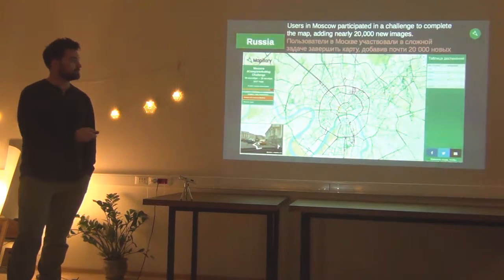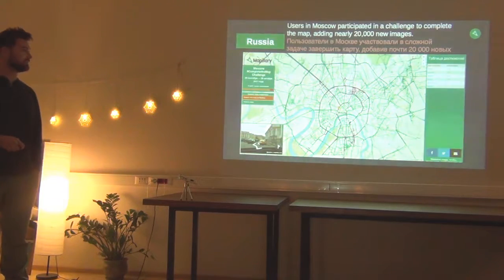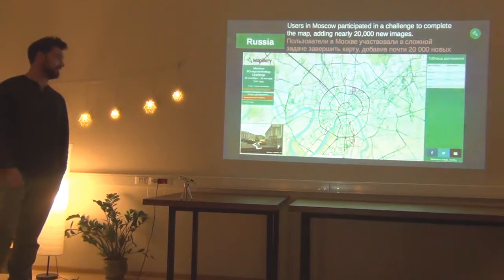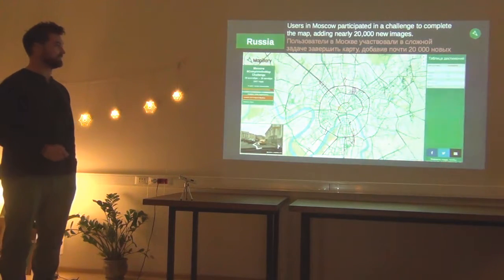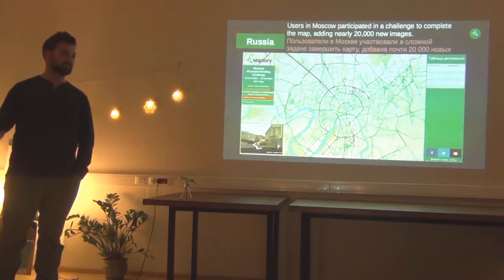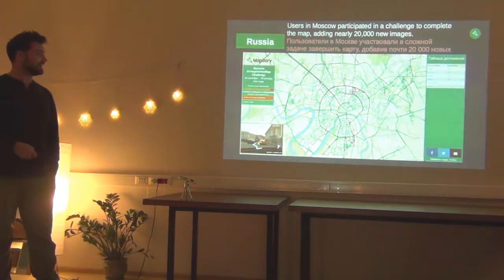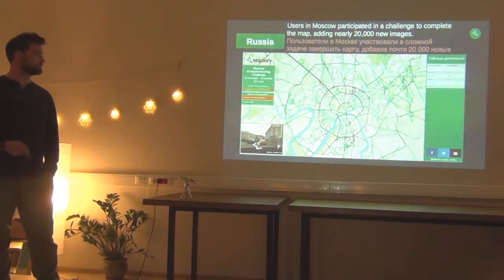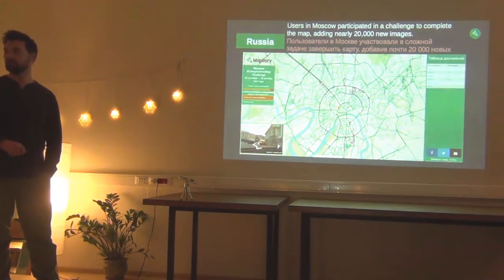Here we are in Moscow. We also had the same challenge, done in October this month, which is very difficult with the weather in Moscow. Nonetheless, we had several users — some of them here with us — who contributed. We added in purple these dark colors as new images in Moscow. It's very impressive, especially from just a small group of people. In green you can see all the historical images on Mapillary from Moscow.